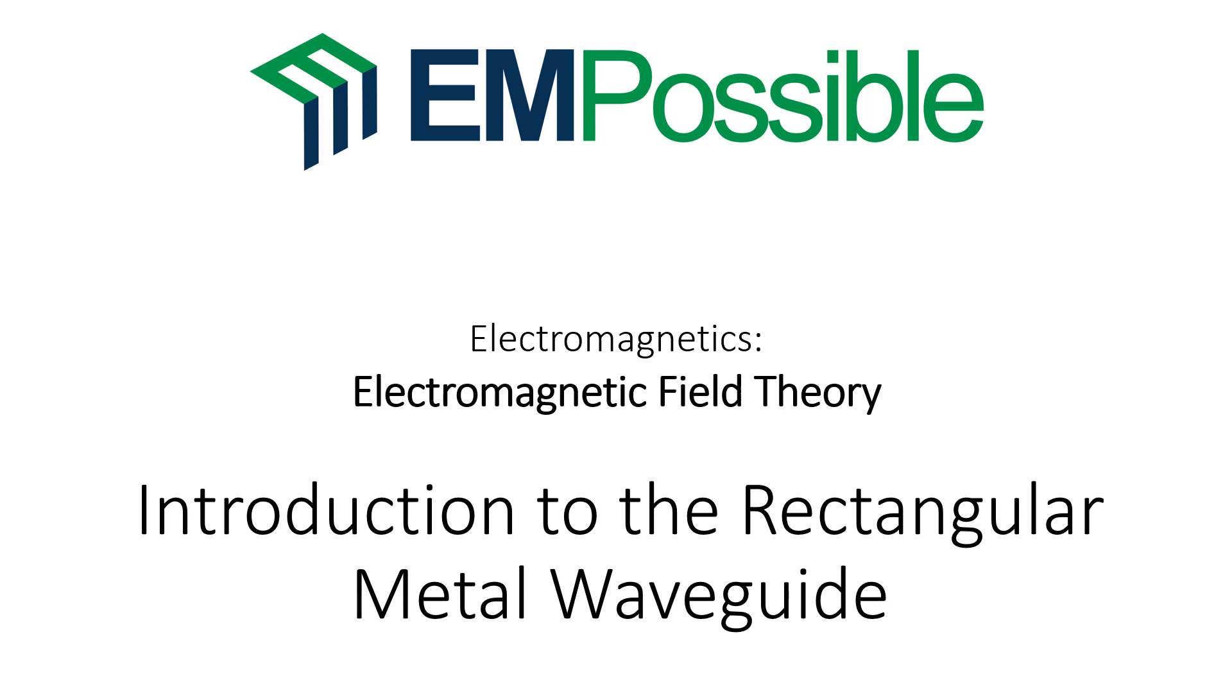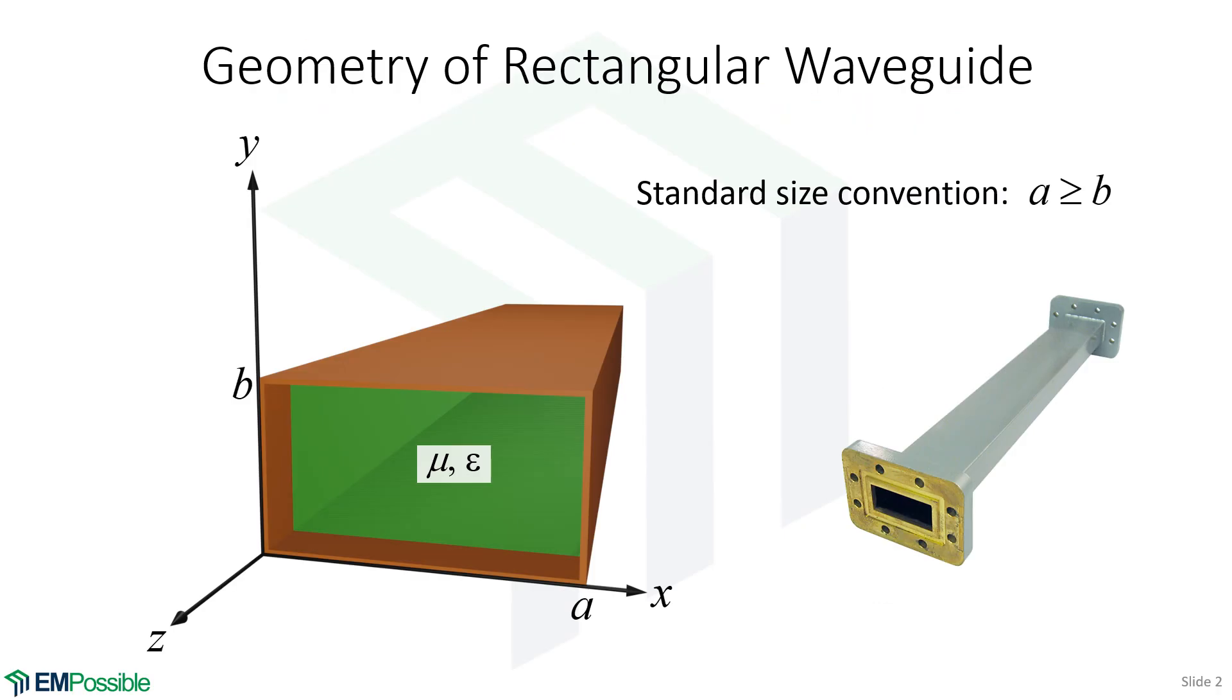It's a rectangular pipe, so we have metal, a very nice electrical conductor, going all the way around the outside. The inside will be filled with a dielectric of some sort. For this analysis, we're assuming that the material fill is homogeneous.